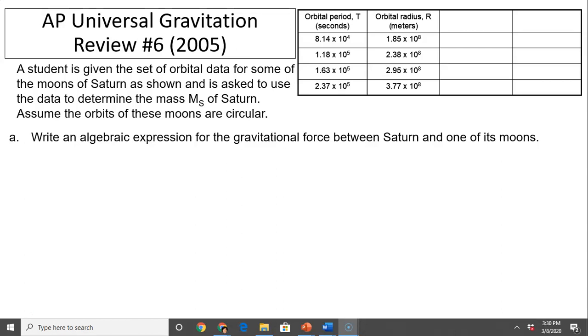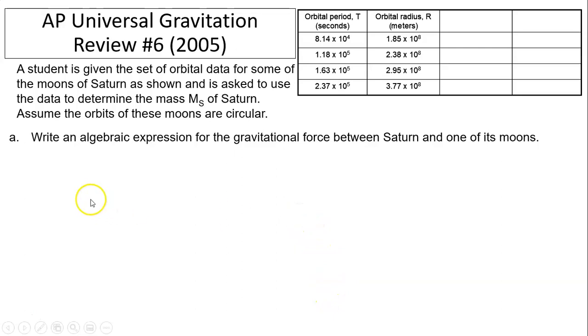Part A: Write an algebraic expression for the gravitational force between Saturn and one of its moons. So the gravitational force is Newton's law of universal gravitation. And I hope everybody should know by now, Fg equals GMmMs divided by r².